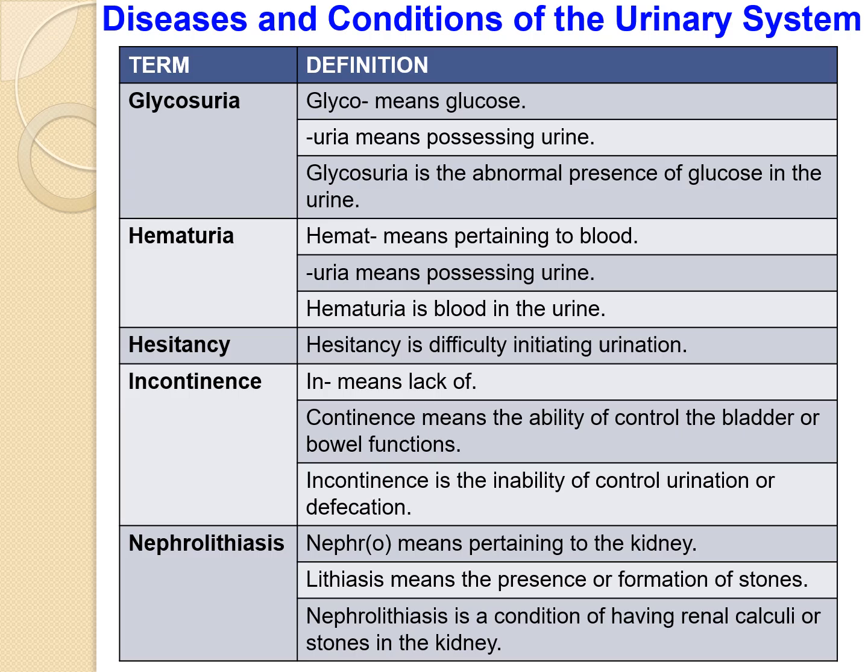Urinary hesitancy is the difficulty to initiate urination. Next is incontinence — 'in' means lack of, 'continence' means ability to control the bladder or bowel functions. Incontinence is the inability to control urination or defecation; the patient might not be able to control the bladder or bowel functions.